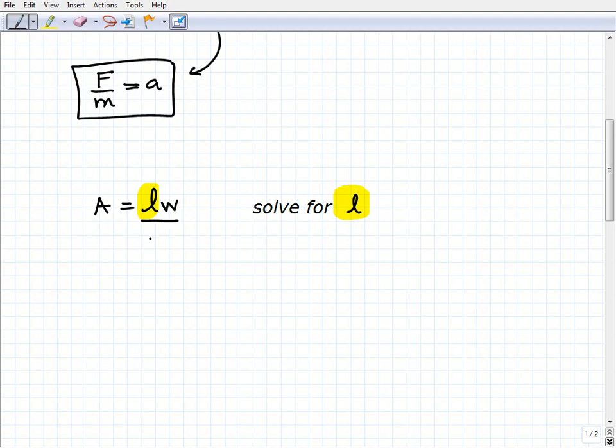This is L times W equals A. So to solve for L, I simply need to divide both sides of the equation by W. So A divided by W equals L. Area divided by width would give you your length.